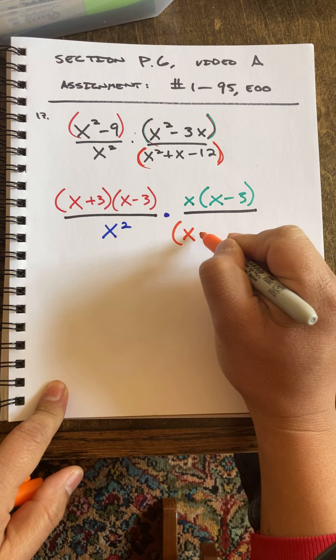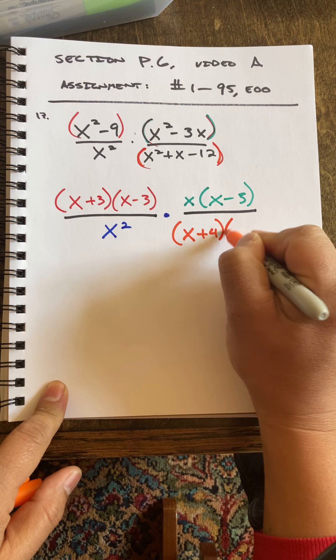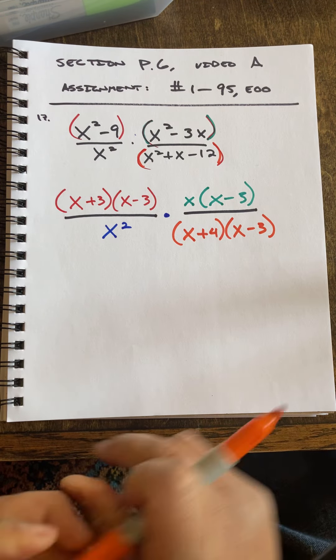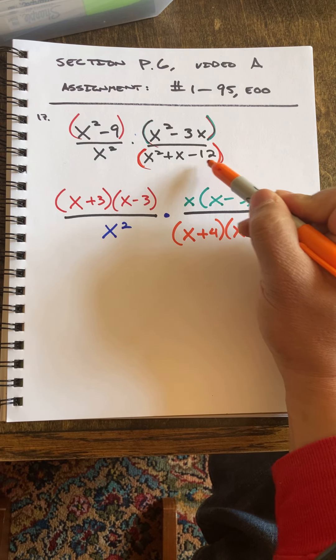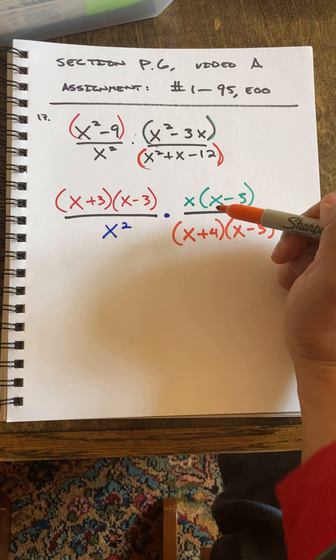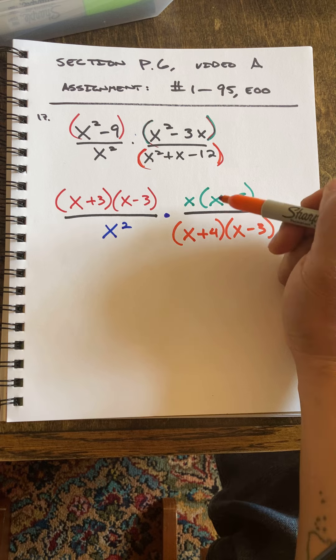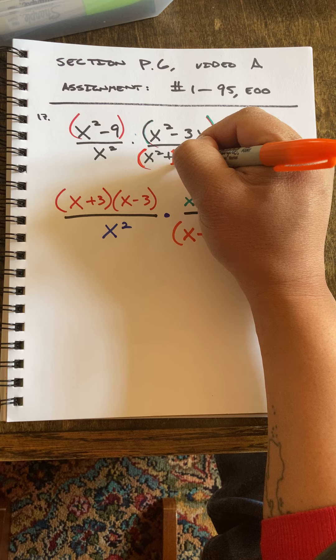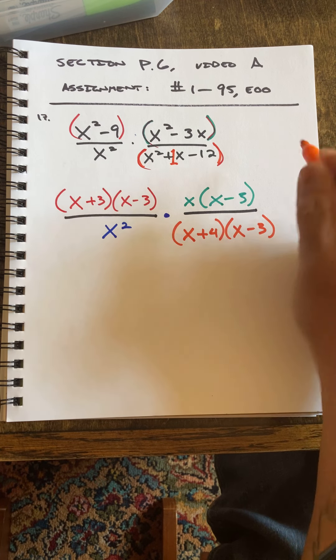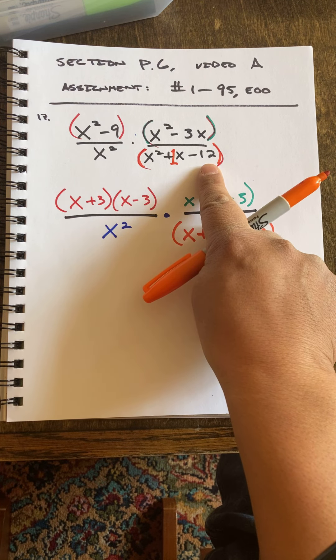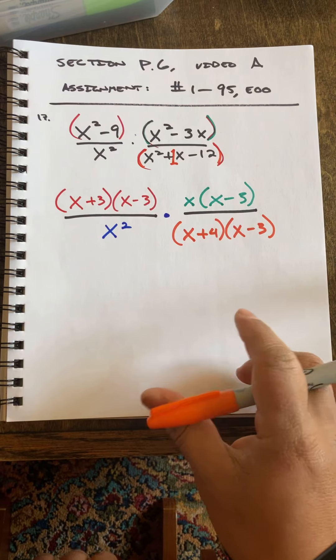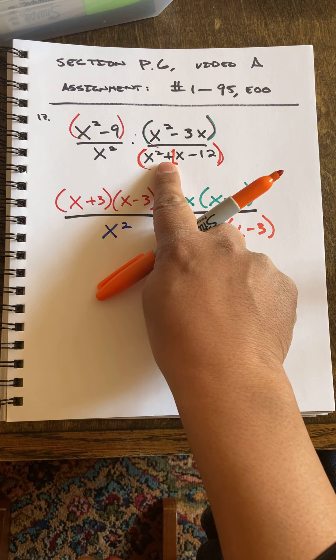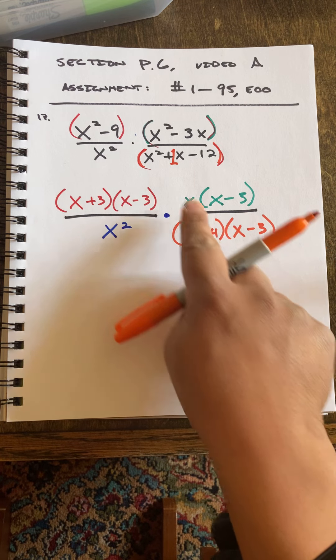This will be X plus four times X minus three. And I know that because, looking at the factors of 12 that multiply to give me negative 12, and there's an invisible one here. So I just know it's going to be three and four because the difference of the numbers three and four is one. And I'm going to go with positive four because I want the positive one.